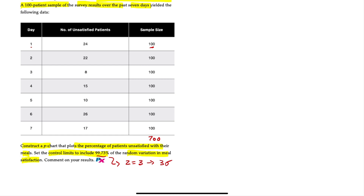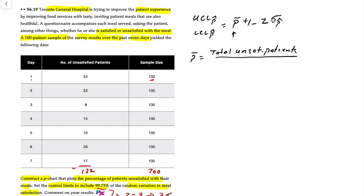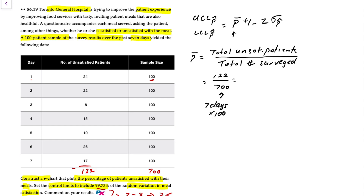First, we need to determine the upper and lower control limits. The formula for the upper and lower control limits for p-charts is p-bar plus or minus z times the standard deviation of the sampling distribution. The first thing we need is p-bar, the overall average proportion of defects. P-bar equals the total number of unsatisfied patients — which is 122 — divided by the total number surveyed, 700. That is 7 days times a sample size of 100, giving us an average proportion of unsatisfied patients of 0.1743, or roughly 17.43 percent.